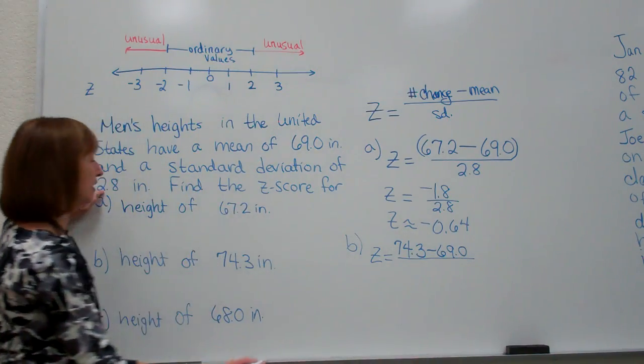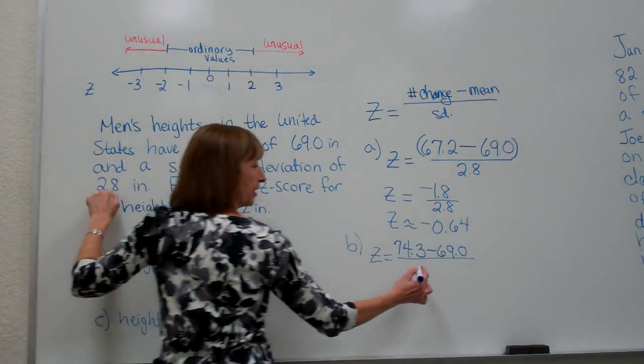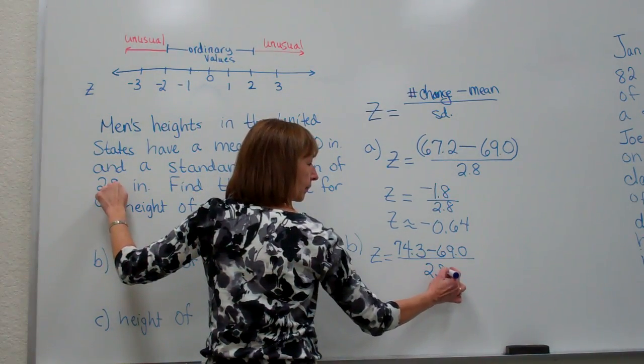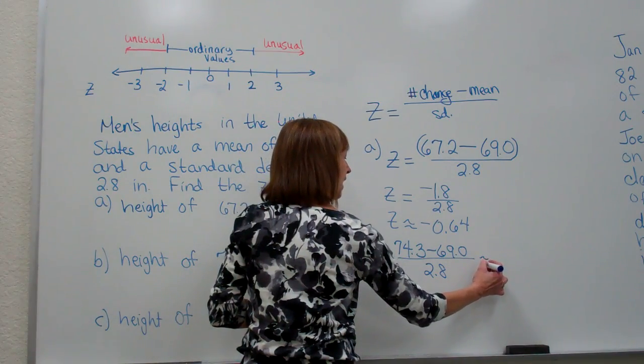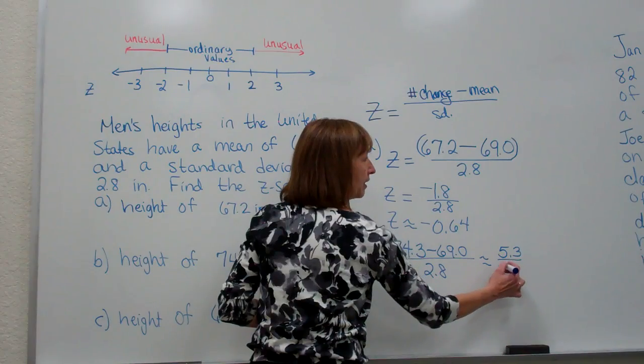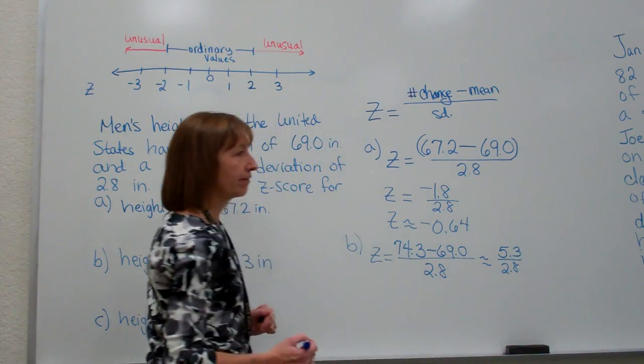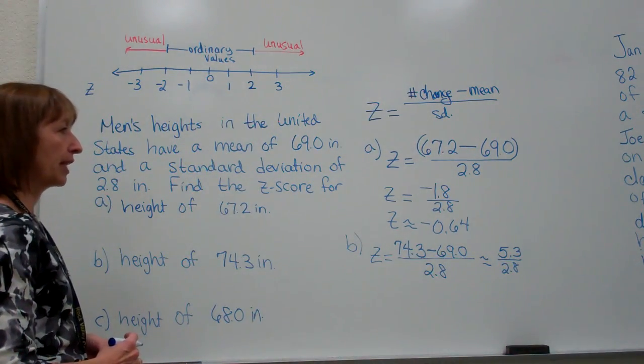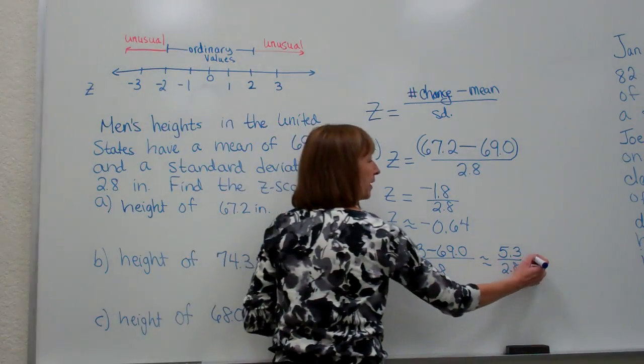Divided by the standard deviation of our data set, 2.8. So then we get that that's equal to 5.3 divided by 2.8. And when I take the 5.3 divided by the 2.8, I have about 1.89.